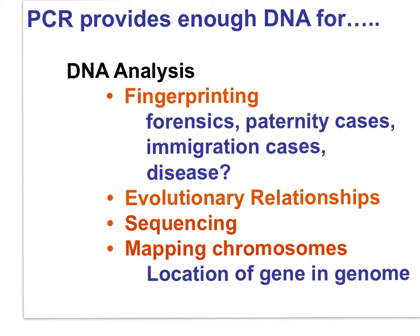PCR provides enough DNA for DNA analysis, and DNA analysis is used in DNA fingerprinting — in forensics cases, paternity cases, immigration cases, or genetic diseases. As well, DNA analysis is used to determine evolutionary relationships. We can sequence DNA and map chromosomes, in other words, locating genes on chromosomes in the genome.